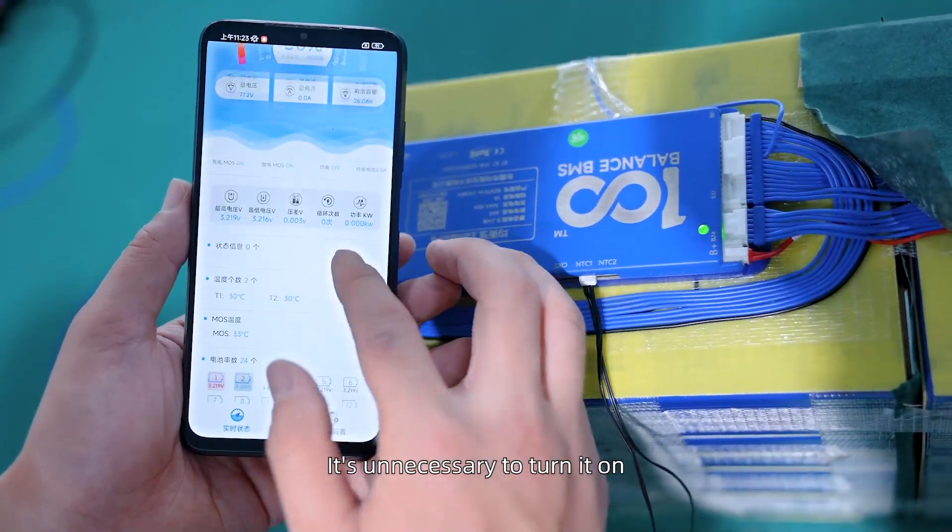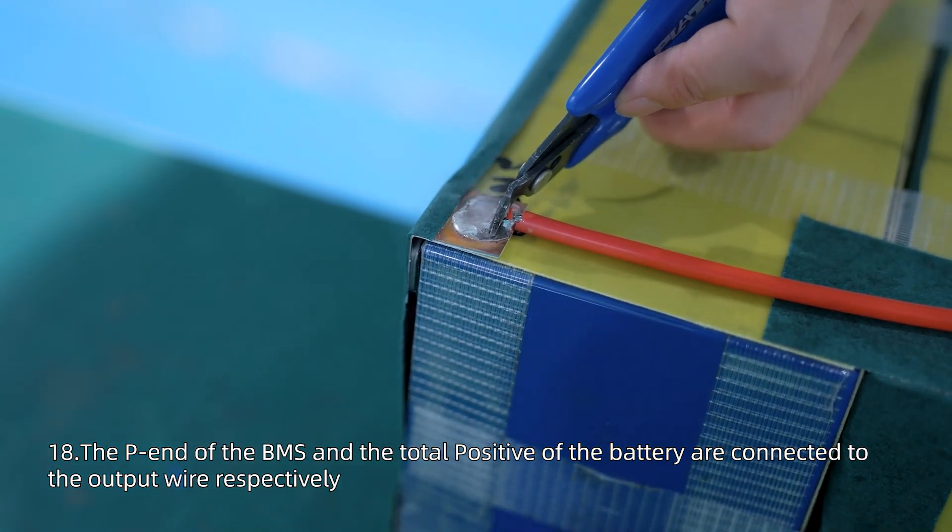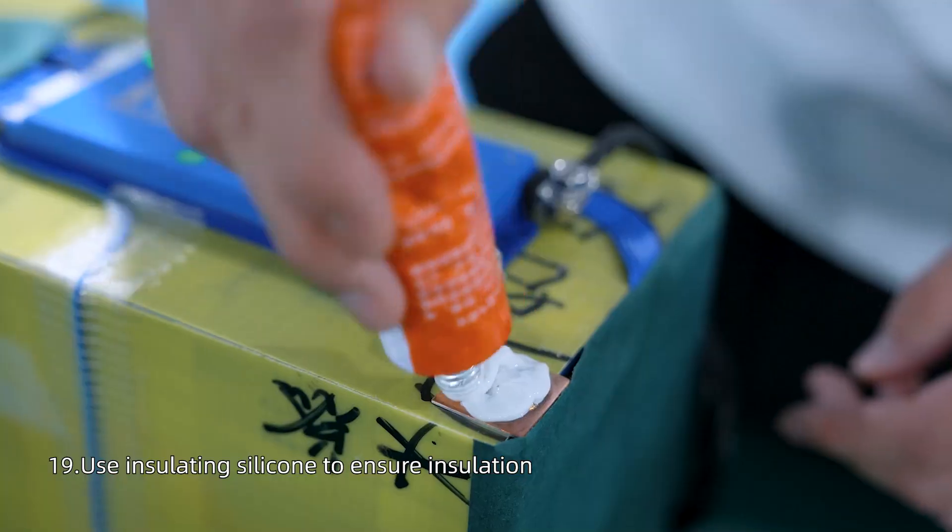The P end of the BMS and the total positive of the battery are connected to the output wire respectively. Use insulation and silicone to ensure insulation.